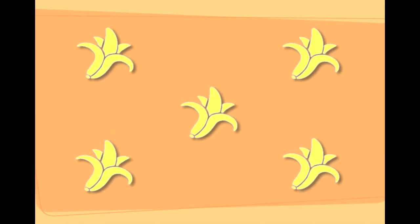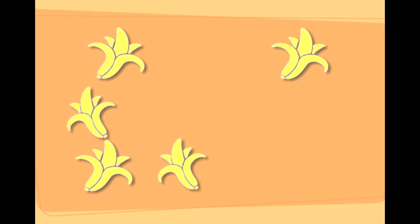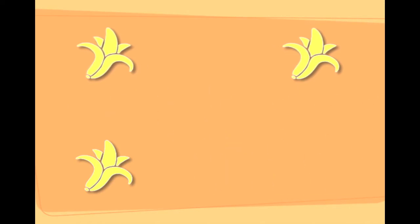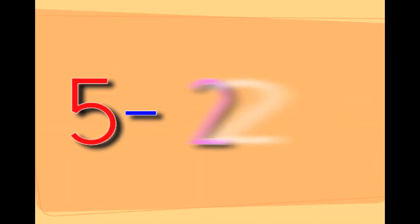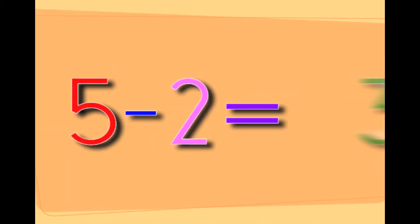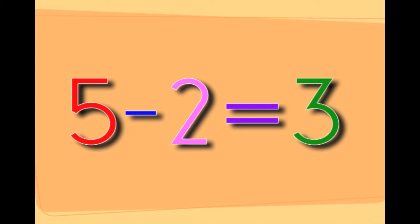These are five bananas. If you take two bananas away from the five bananas it will leave you with three bananas. Five minus two equals three.